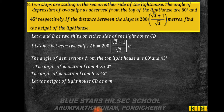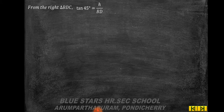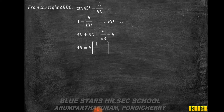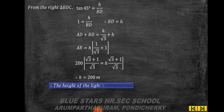From right triangle ADC: tan 60° = h/AD, so √3 = h/AD, giving AD = h/√3. From right triangle BDC: tan 45° = h/BD, so BD = h. Therefore AD + BD = h/√3 + h = h(1/√3 + 1). Setting this equal to 200(√3 + 1)/√3, we get h = 200 meters. The height of the lighthouse is 200 meters.